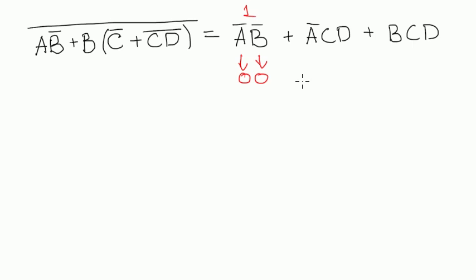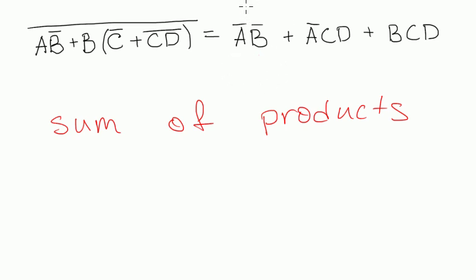And moreover, this type of expression is called sum of products. Sum of products. Because it's a sum of products. As you can see, you have sum here and sum right here, and between sums you have products. This product, this product, and this product. So we have sum of three products. Right?